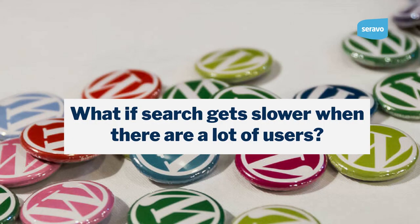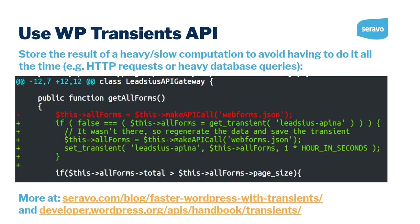What if the search is fast for a single user but slows down with more users? For cases where you have a heavy database query or external API call, you can save the result in a WordPress transient — a built-in cache. This is very useful when lots of users are doing the same thing repeatedly: instead of running the real query every time, save the result for the first user in a WP transient and deliver it for the next 10 or 30 minutes, making it fast for all consecutive users.